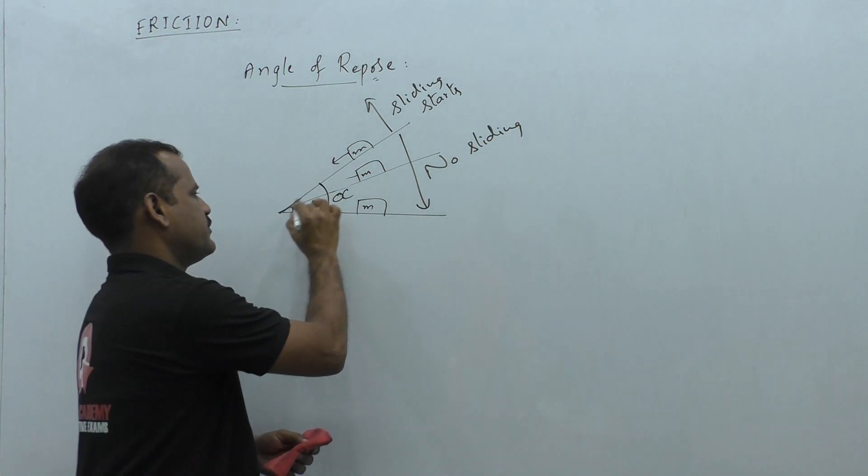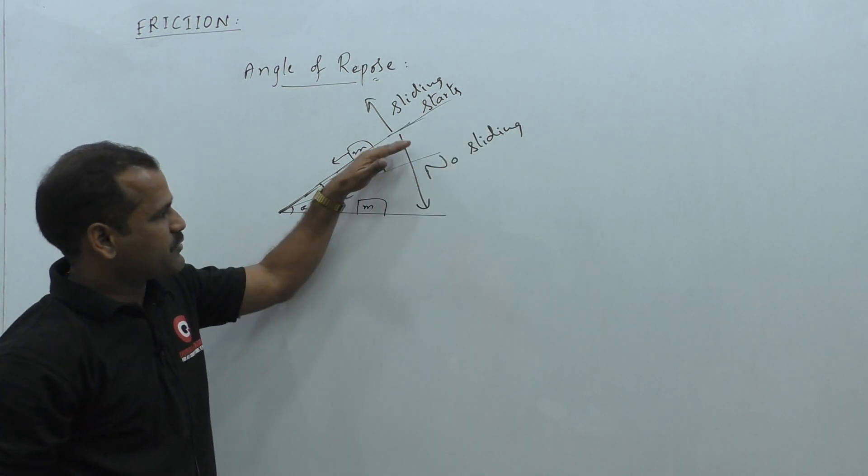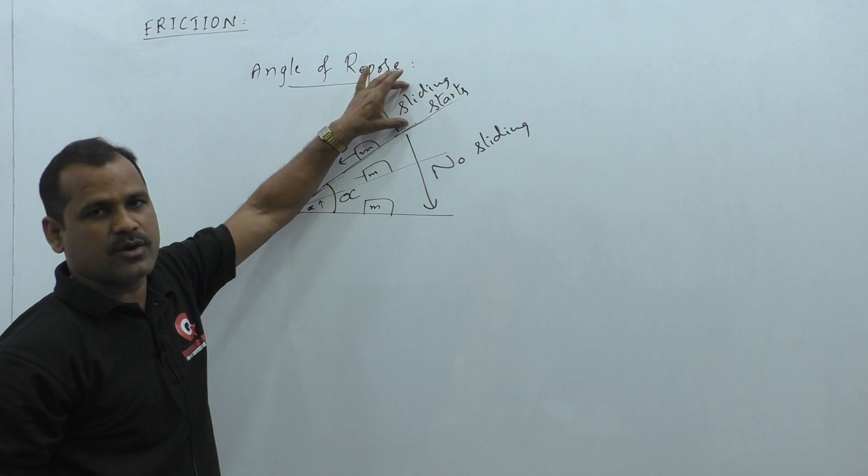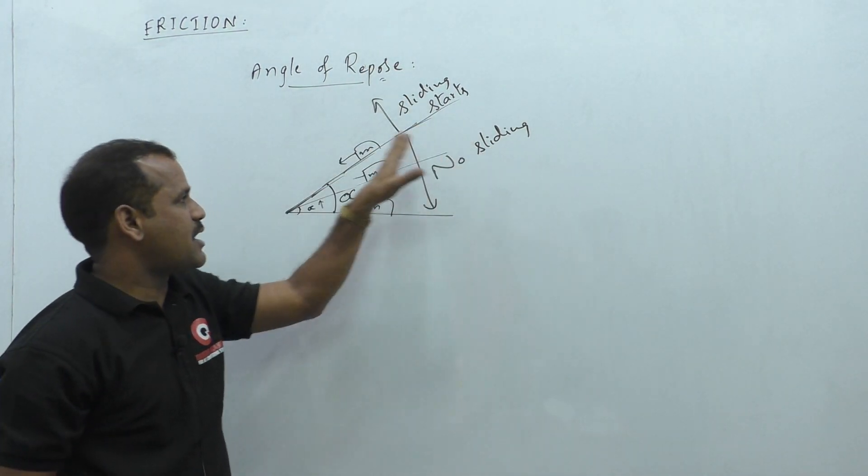So, this angle divides these two regions. That is, after this angle, the object starts sliding down and before this angle, there is no sliding of this object on the plane.